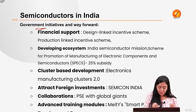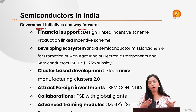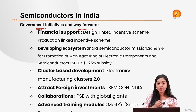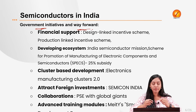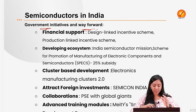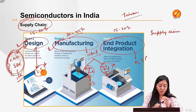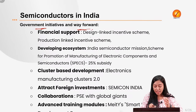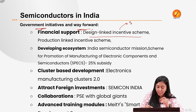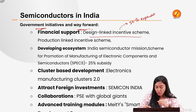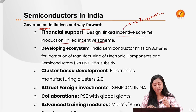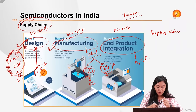What are the government initiatives and way forward? Since this is a capital-intensive industry, the government is providing financial support in two key stages. For the design stage, the Design Linked Incentive Scheme was developed, where the government will cover up to 50% of the total expenditure on semiconductor products created by Indian industries. For the manufacturing stage, the Production Linked Incentive Scheme provides 4–6% interest on every incremental sale of electronics or semiconductors manufactured inside India.